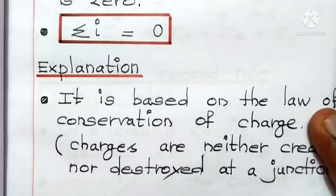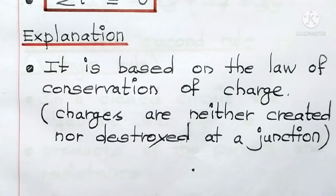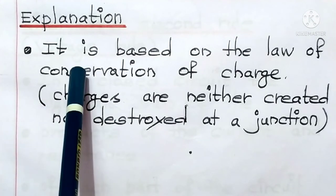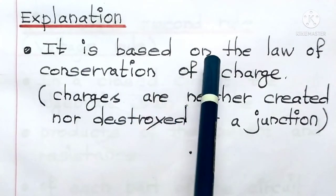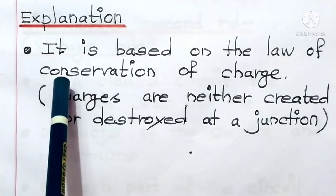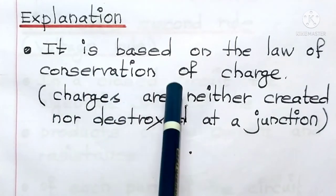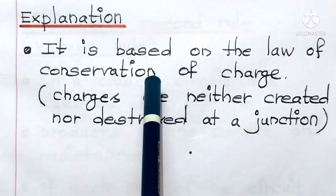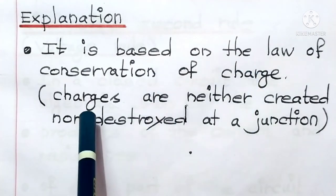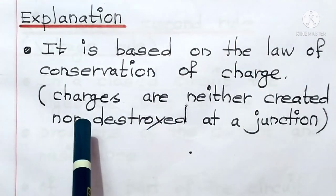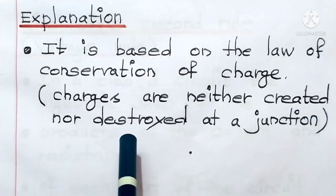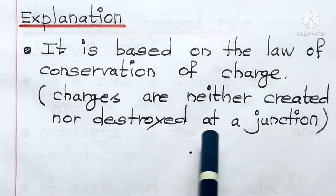Accordingly, you will get the marks. Now, explanation. It is based on the law of conservation of charge. What is meant by the law of conservation of charge? It means charges are neither created nor destroyed at the junction.